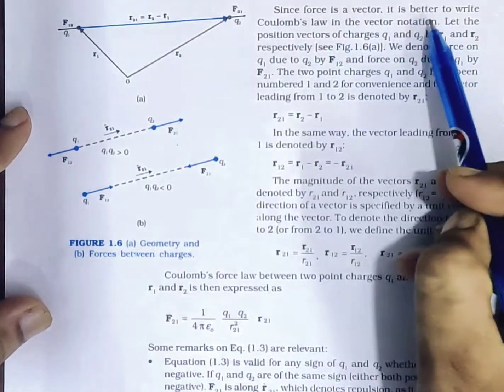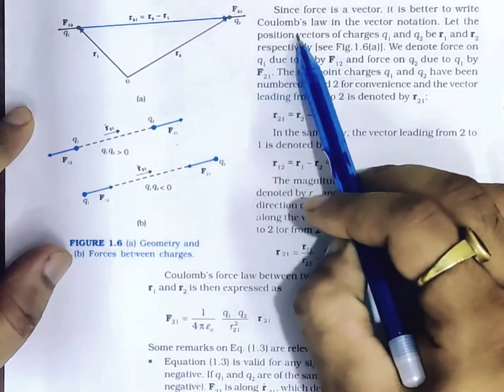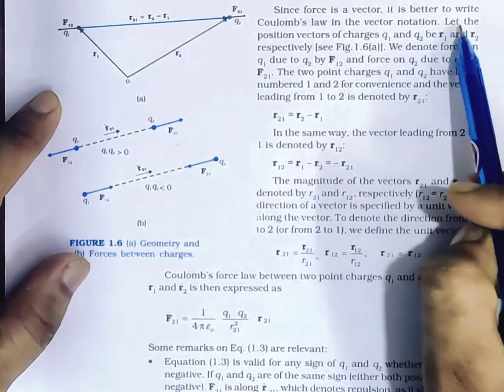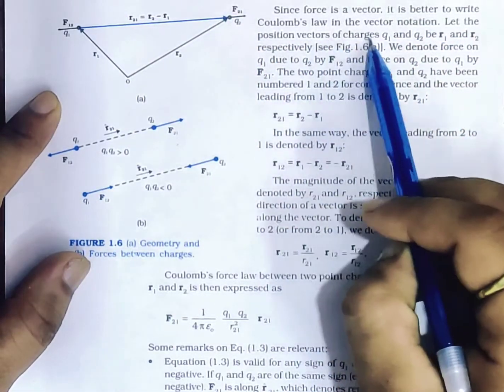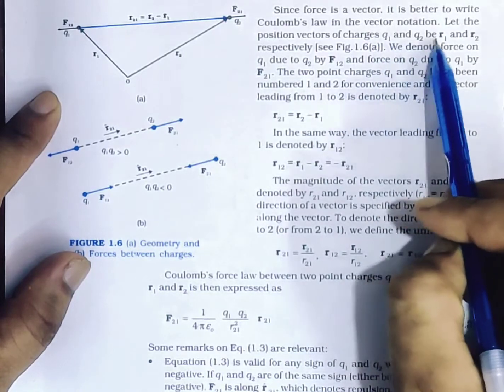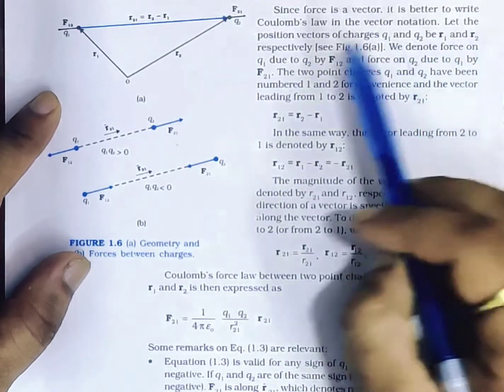Since force is a vector, it is better to write Coulomb's law in vector notation. Let the position vectors of charges Q1 and Q2 be R1 and R2 respectively.